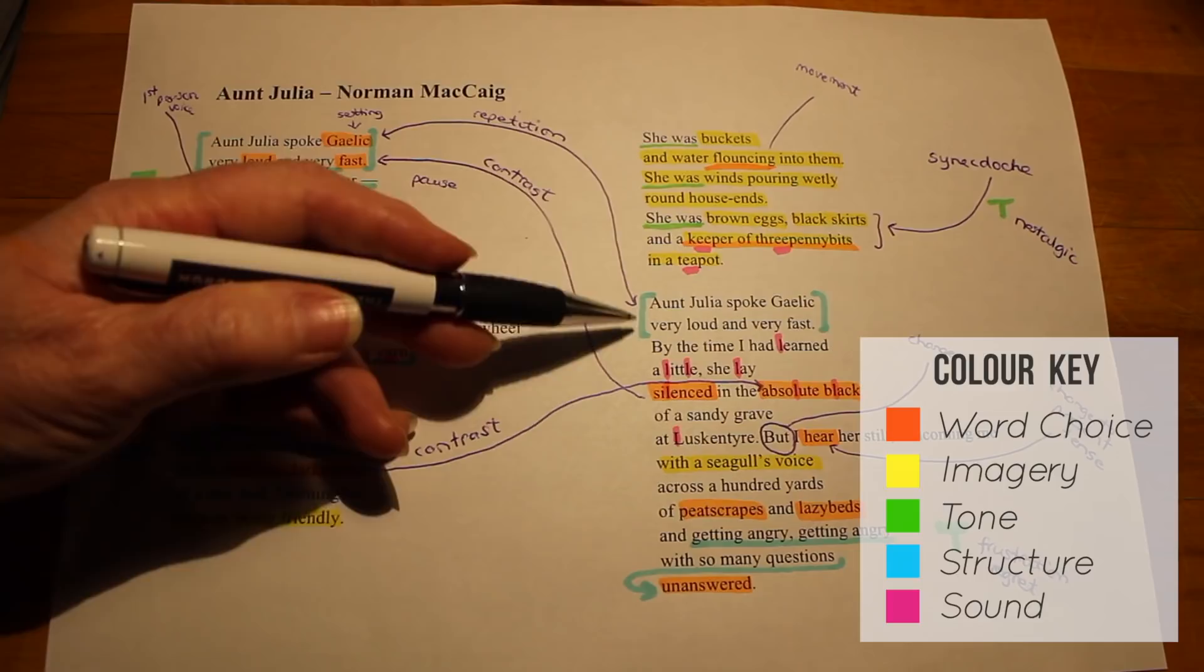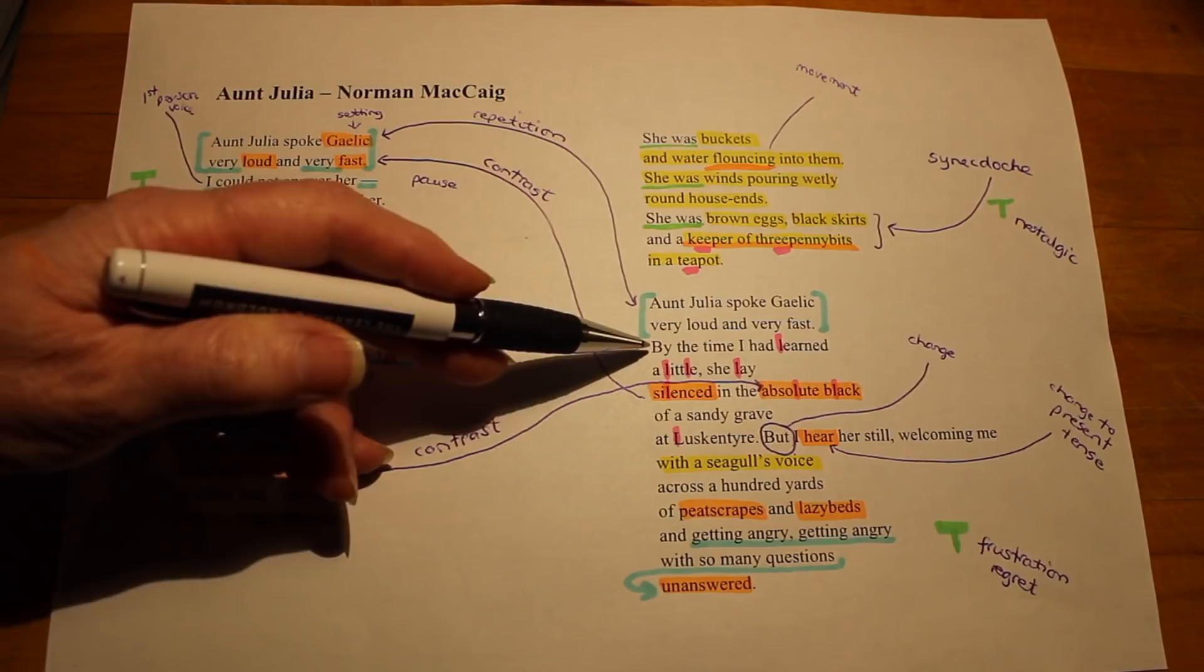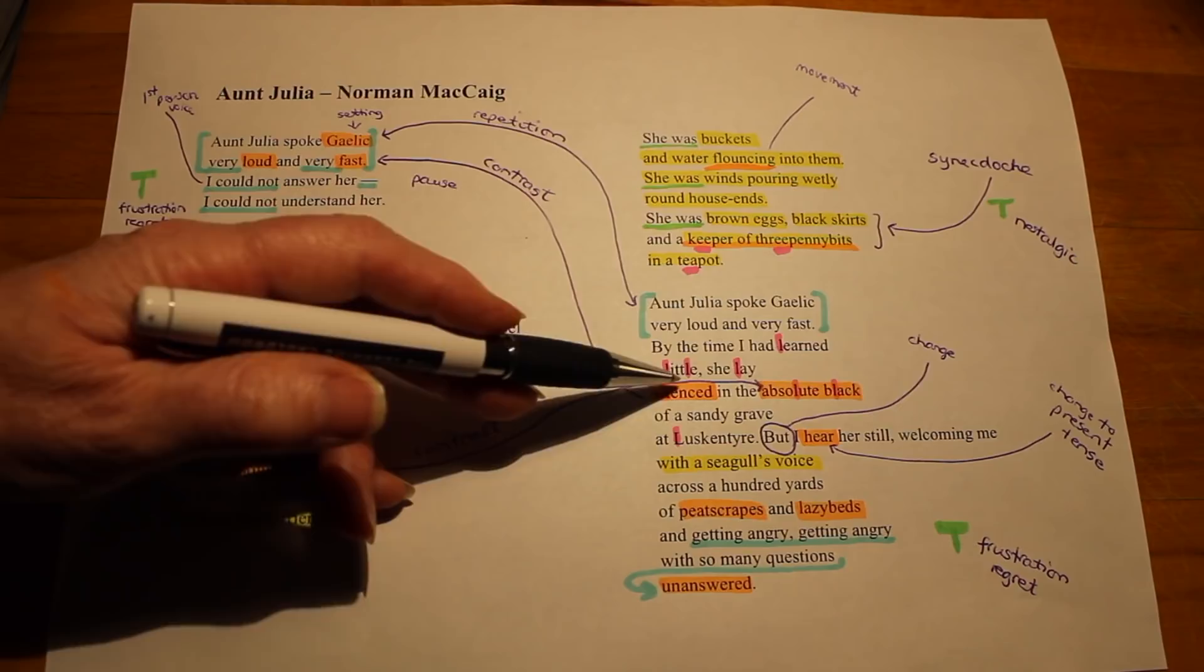Then, as mentioned previously, we have the repeated first two lines of the first stanza, but the change comes straight after. He says, by the time I had learned a little, she lay silenced in the absolute black.